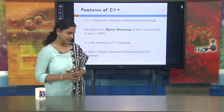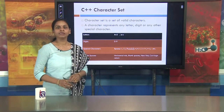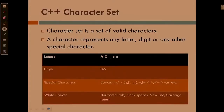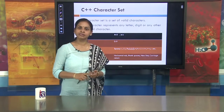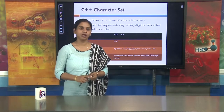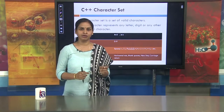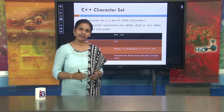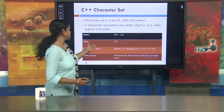First we will have a look on what is the character set C++ allows. A character set is a collection of valid characters. It includes alphabets, digits, and some special symbols. Under alphabets, it includes capital letters from A to Z and small letters from a to z. Under digits, it includes 0 to 9.